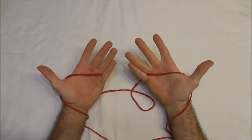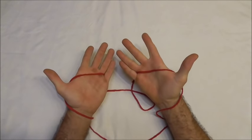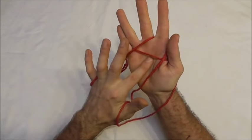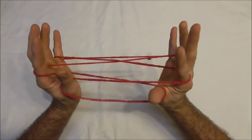This string figure is going to need a medium loop of string and we're going to start off by placing the string across our palms and then picking up the palm strings with our pointer fingers and then using our thumbs to go over the pointer fingers into the little finger loop from below.